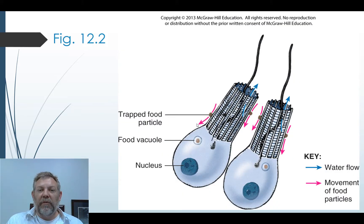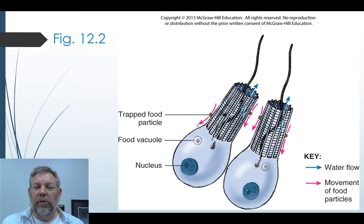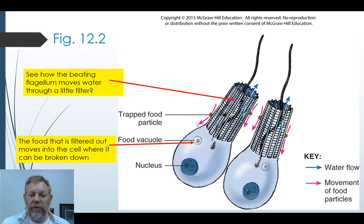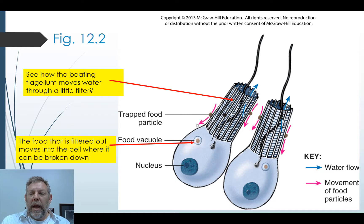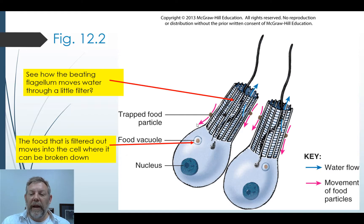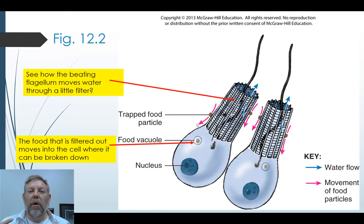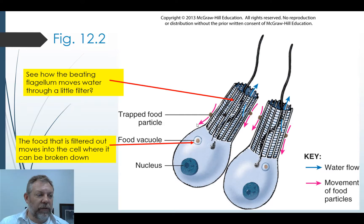Here's a figure from your book showing these choanocytes — it shows the direction of water flow and food flow. That little beating flagellum moves the water through the filter, and the food gets pulled down, encased in a vacuole, and taken into the cell where it can be broken down. With a whole bunch of these cells along the sides of the sponge all beating at the same time, you can get a lot of water moving through.